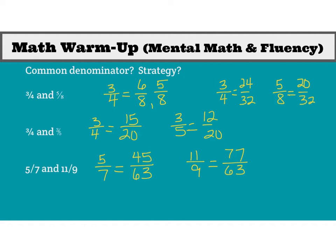And our last one kind of works the same way. Our denominators originally are a seven and a nine. They don't have any multiples in common. So you could multiply seven times nine, get a common denominator of sixty-three. And five-sevenths becomes forty-five sixty-thirds. And eleven-ninths becomes seventy-seven sixty-thirds.